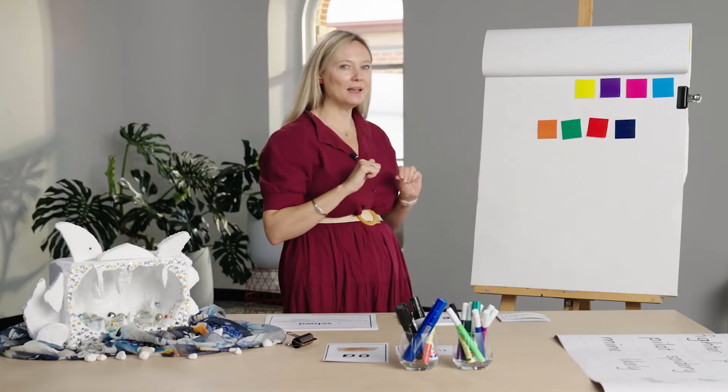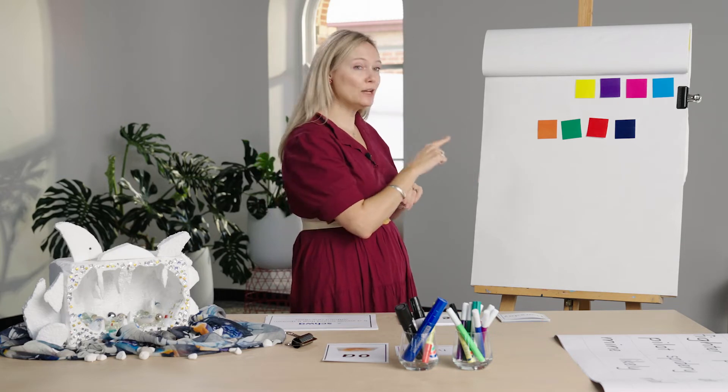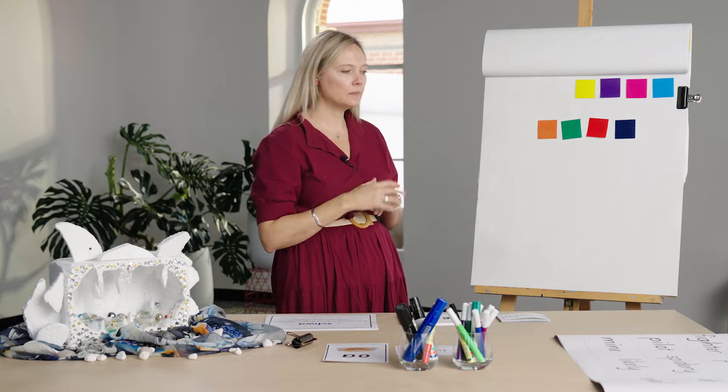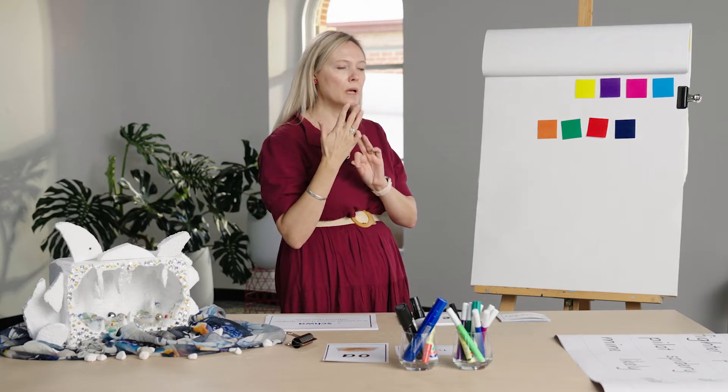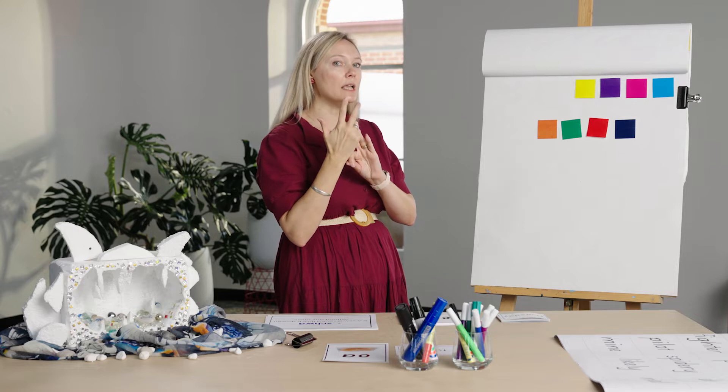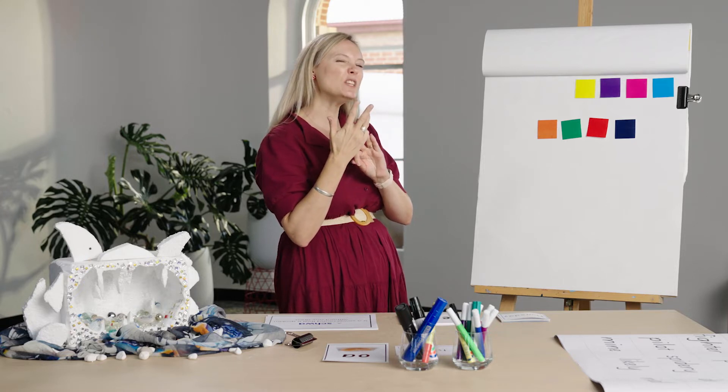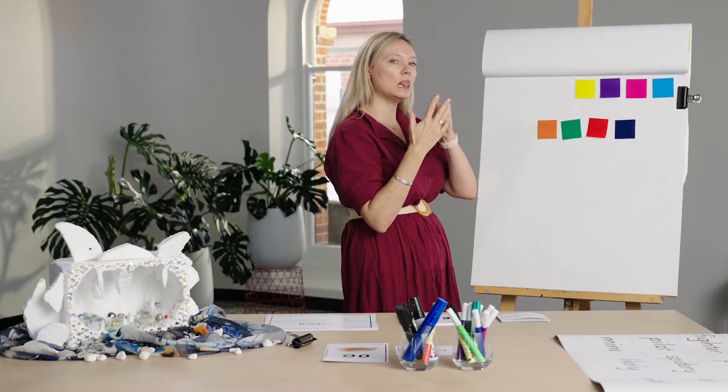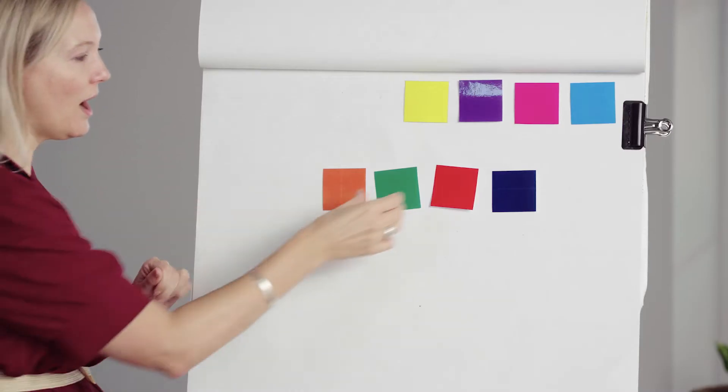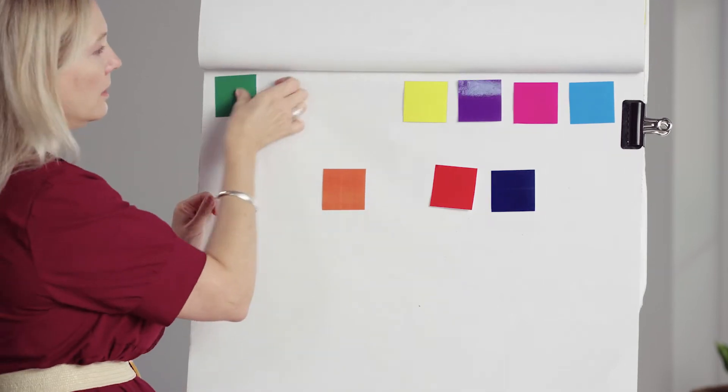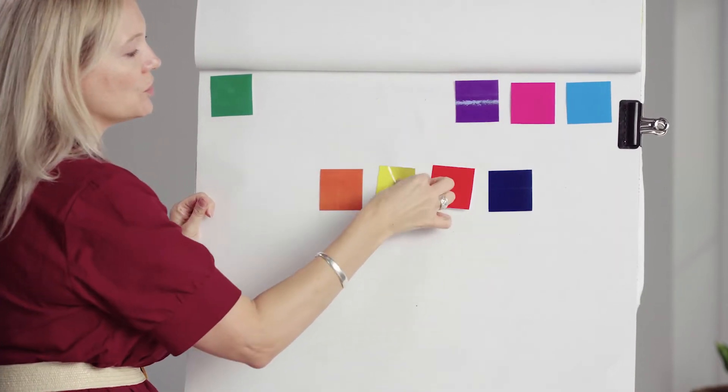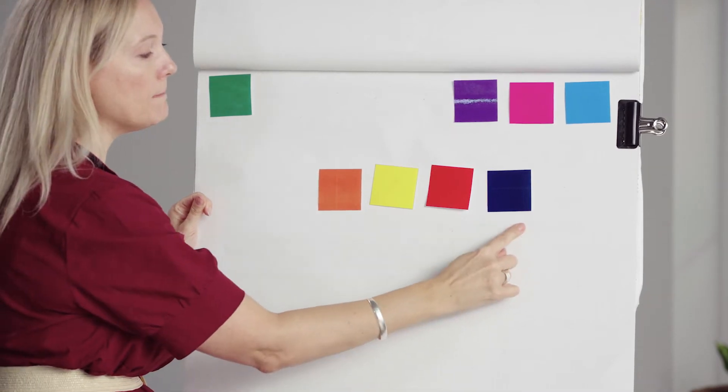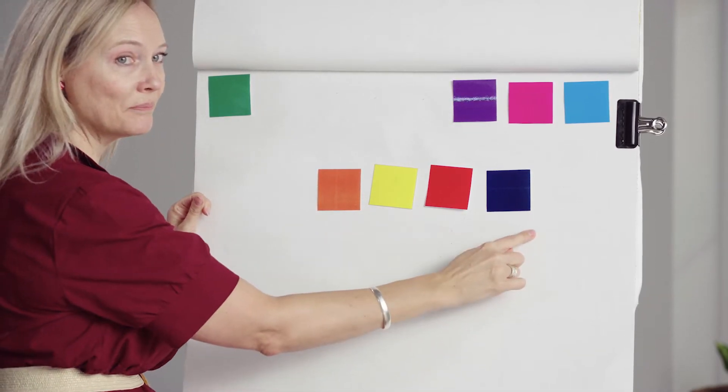Now let's change swim to slim. S, w, i, m. Which phoneme do we need to change? S, w, i, m. You're right. Let's take out w. Change it to l. S, l, i, m. Slim. Well done.